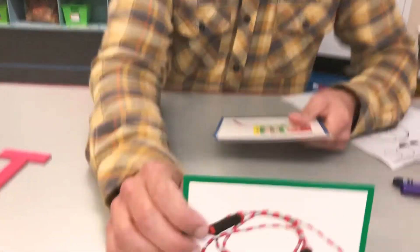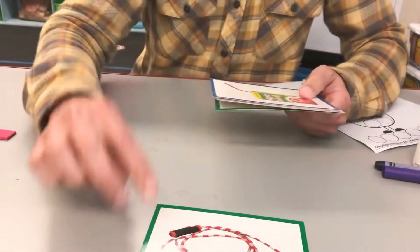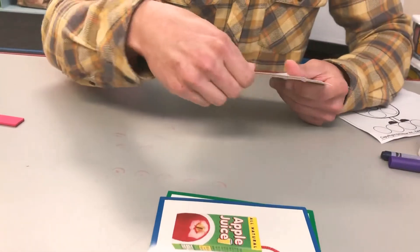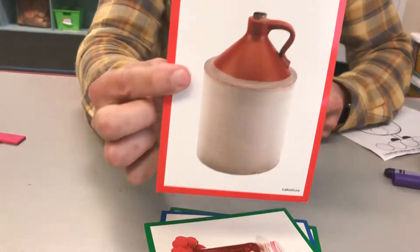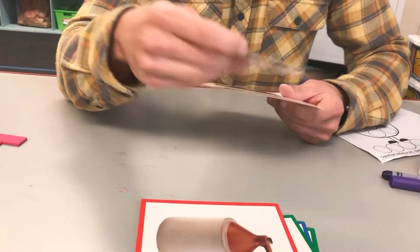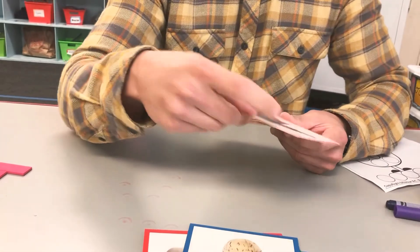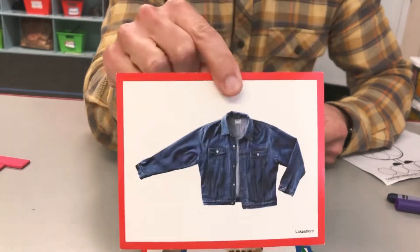And then I'll show you some pictures. Let's start with J. First we have jump rope, juice, jam, jug, jellyfish, we're gonna look at that this week, a jean jacket.